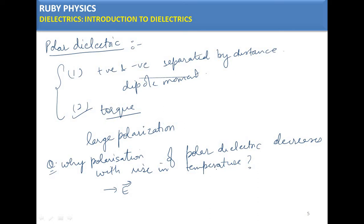If the electric field is stronger, it will favor keeping the dipoles aligned in the field direction. I hope all these topics are clear to you. If you have any doubts, you can place them in the comment section. That's all for today — thank you and have a nice day.